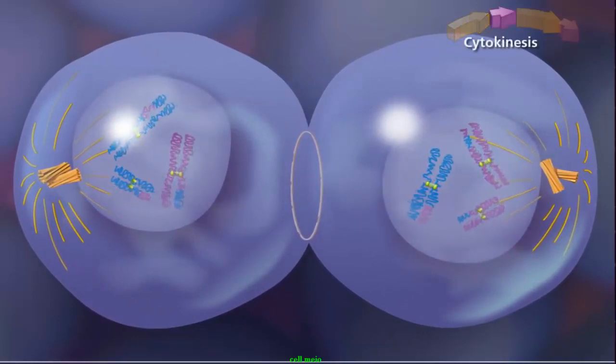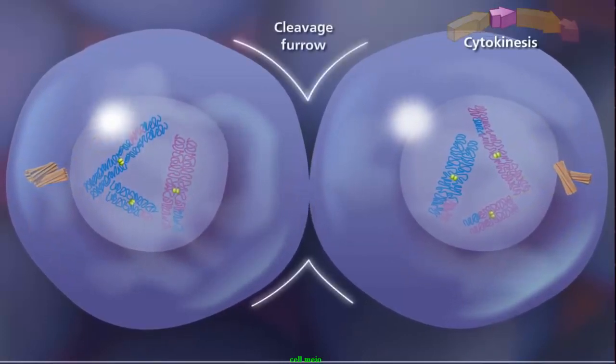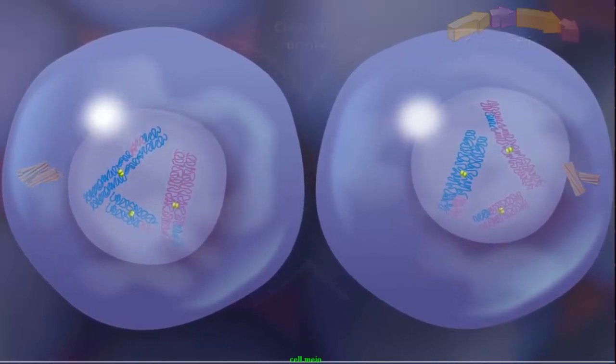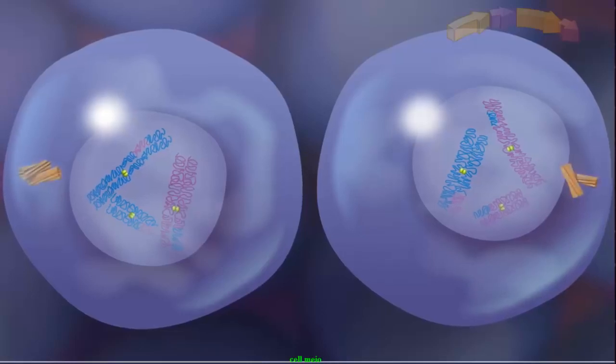Cytokinesis separates the cytoplasmic material, and the two daughter cells are separated by a cleavage furrow. Since the final product of meiosis I is two haploid cells, meiosis II begins without the chromosomes going through another round of DNA replication.